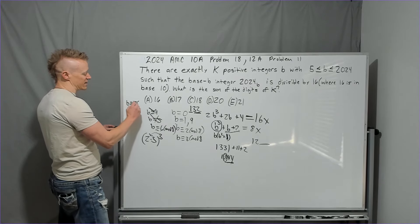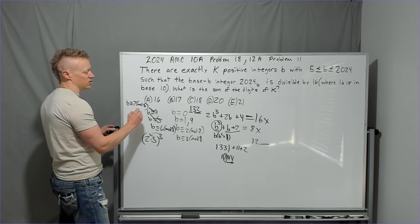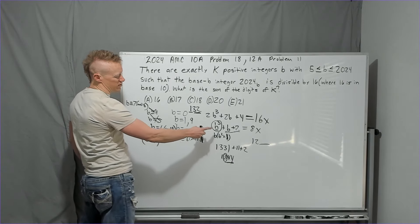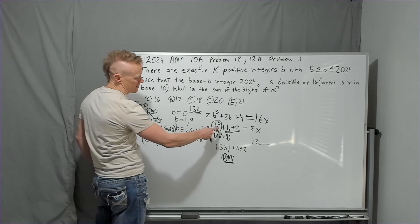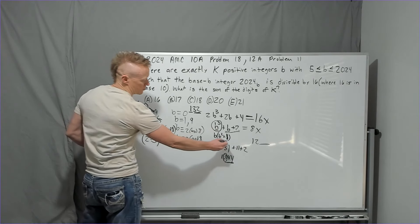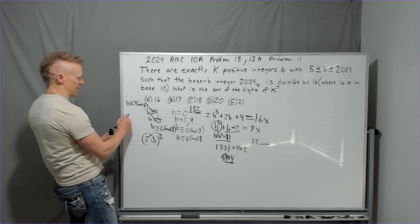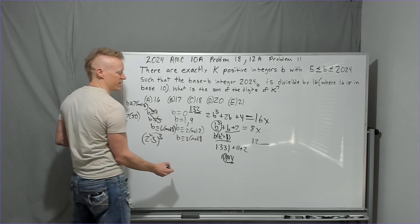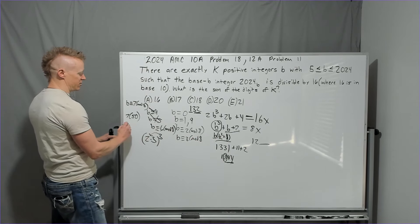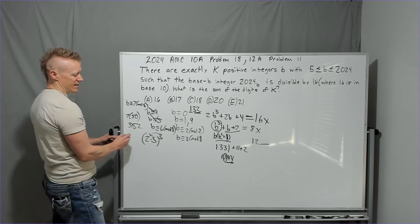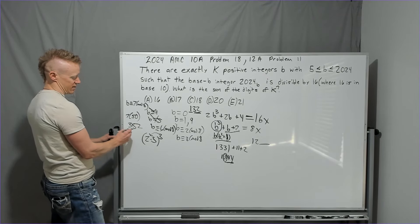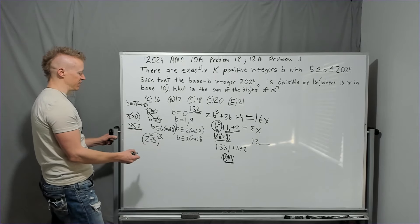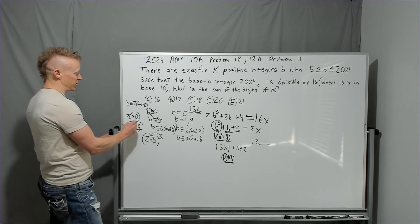So then B congruent to 7 mod 8. Does that also work? There's a few ways you could go about it, but 7, let's see, I guess I could use this one right here. You'll have 7 times 50, which is 7 times 49 plus 1. That's 350 plus 2. You get 352. And again, that's exactly what we want. Odd number, not a multiple of 8, but yes, a multiple of 4. So that's going to be divisible by 8 also.